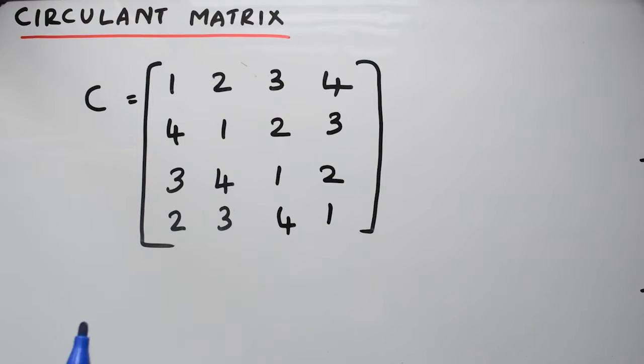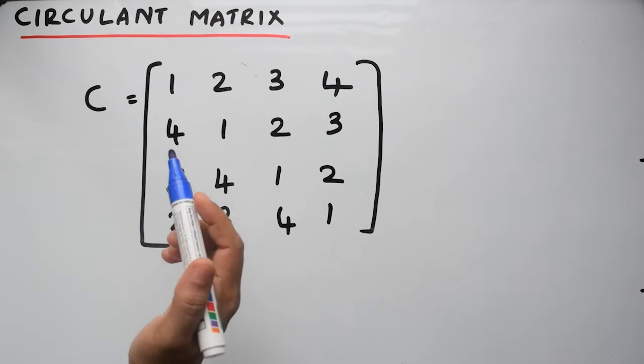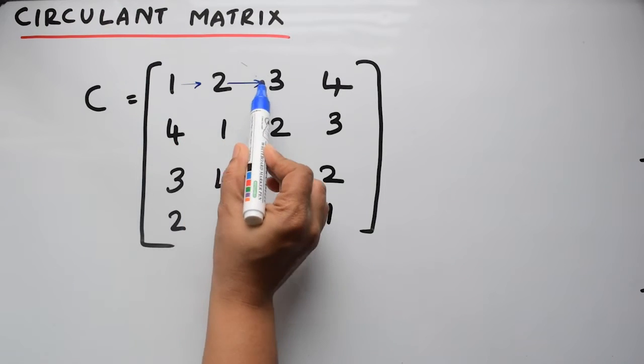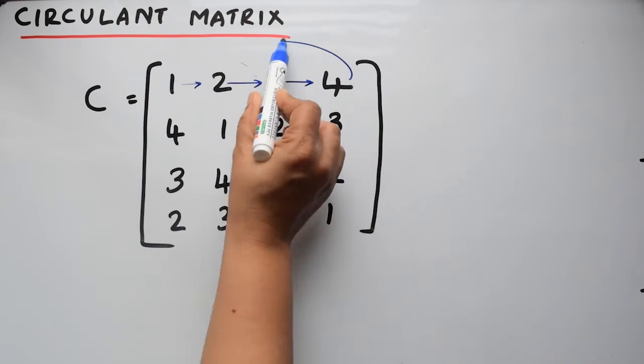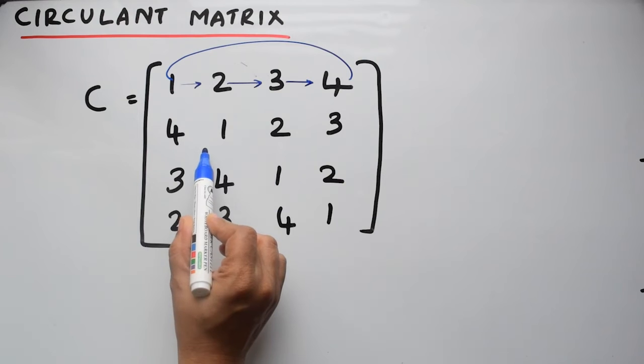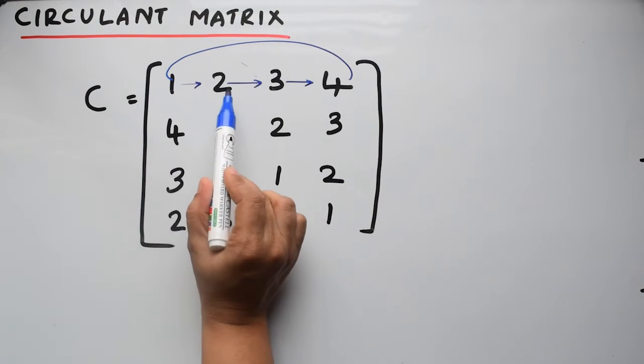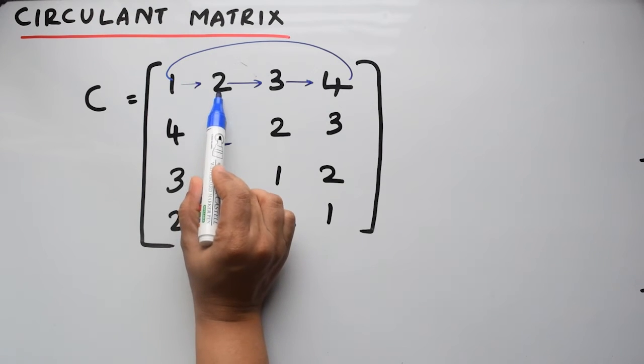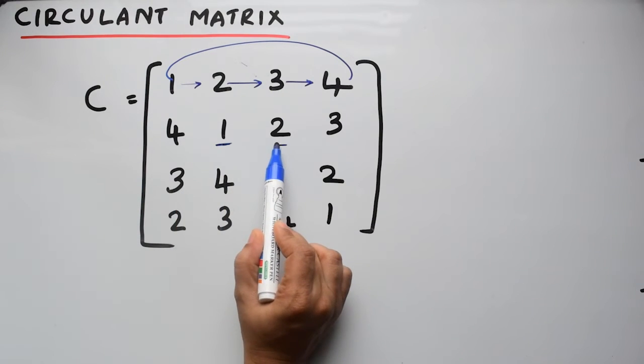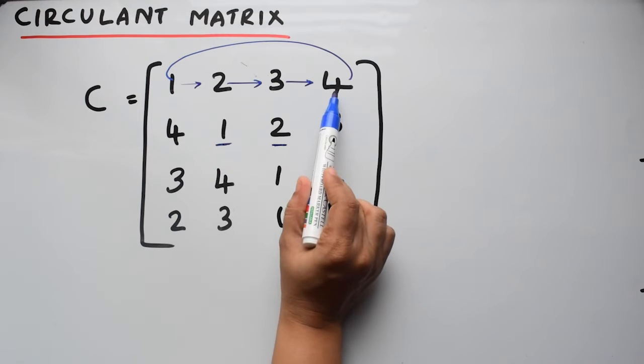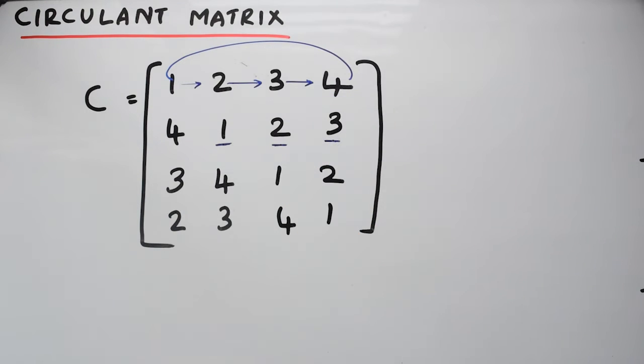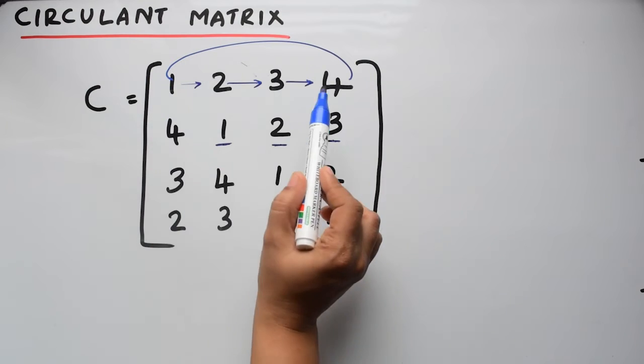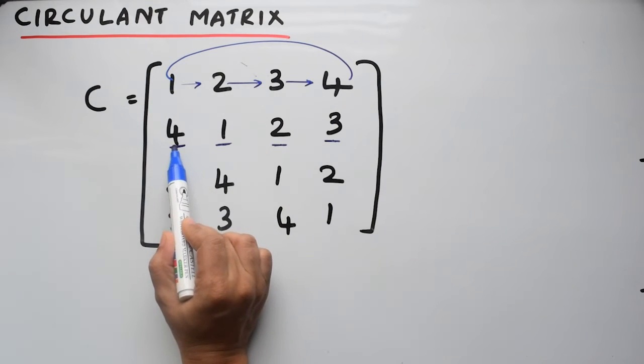Here you can see this is the first row. This first row is circulantly shifted to the right by one position to form the second row. This one is shifted to this position, this two is shifted here, this three is shifted here. Now this four is shifted to this position in a circular way.